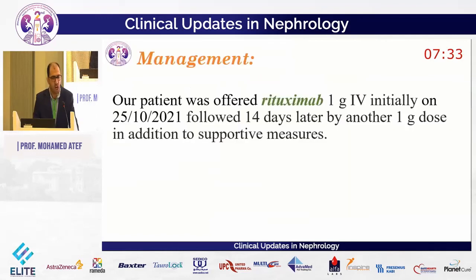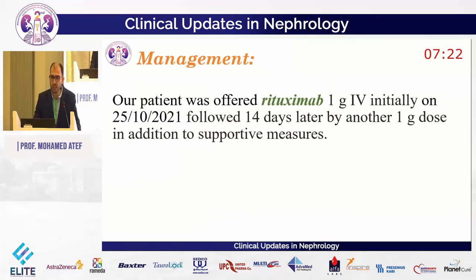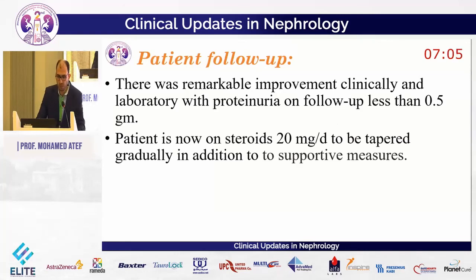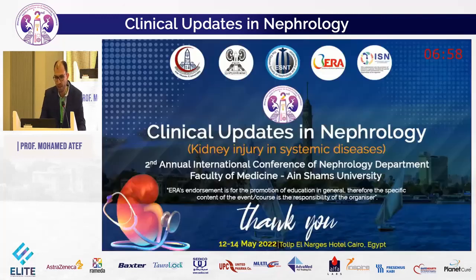Our patient was offered rituximab 1 gram IV on 25 October 2021, followed by another dose 14 days later, in addition to supportive measures. On follow-up, there was remarkable improvement both clinically and in proteinuria levels, which dropped to less than 0.5 grams. The patient is now on steroids 20 mg per day to be tapered gradually, in addition to supportive measures. Thank you.